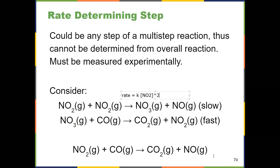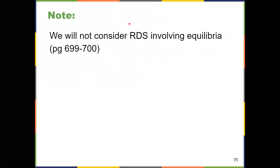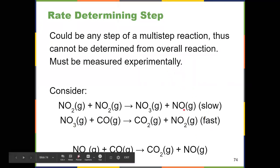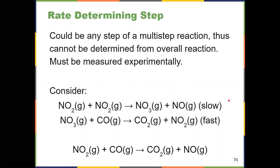Notice you can't get that from looking at the overall reaction, because if you look at the overall reaction there's only a single NO₂. But the reaction mechanism itself gives us a lot more information. If you know what the slow step is, look just at that one step, set the rate law equal to the concentrations of its reactants, and you're in business. Rate determining steps involving equilibria are in pages 699–700 of your textbook and are much more complex — not something you need to worry about. For simple forward reactions broken into a mechanism, you should be able to identify the rate determining step and write a rate law from it.